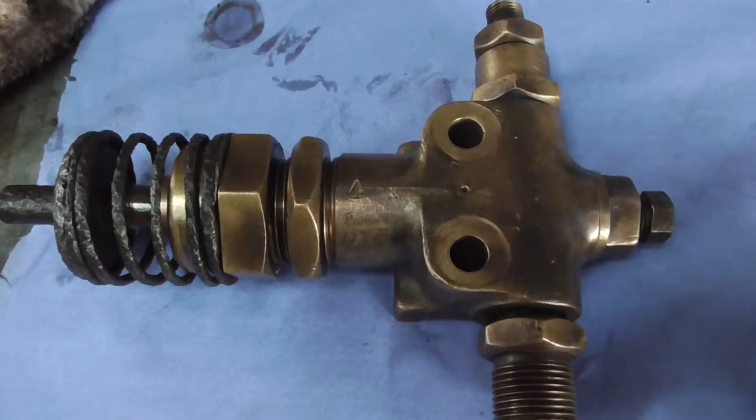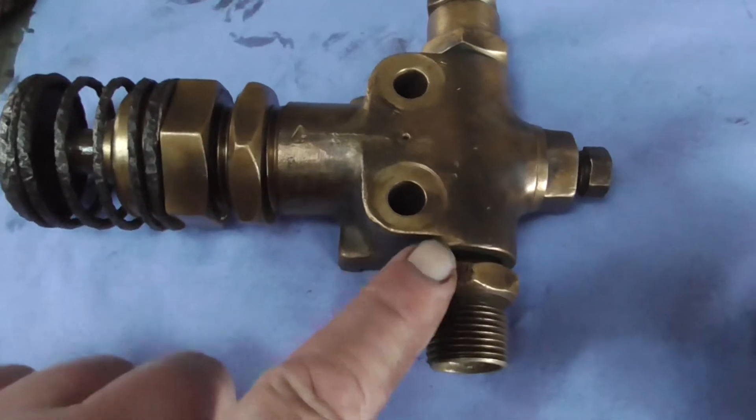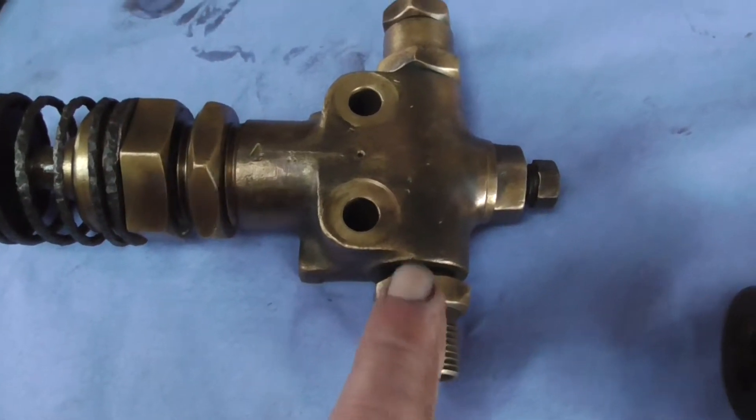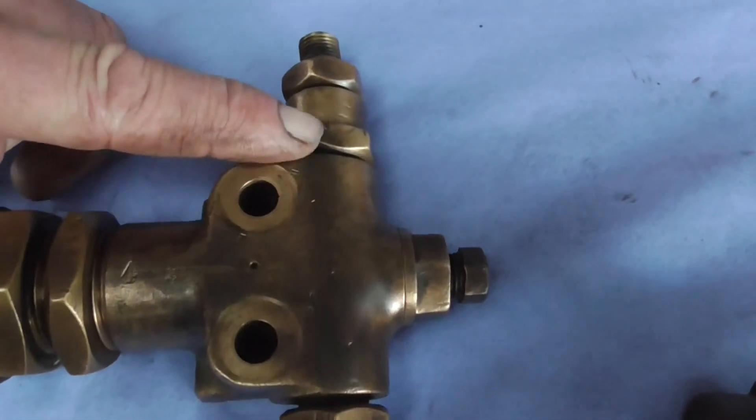This is one of the fuel pumps of the PETA S2. This is the fuel inlet and this is the fuel outlet that goes to the injector.